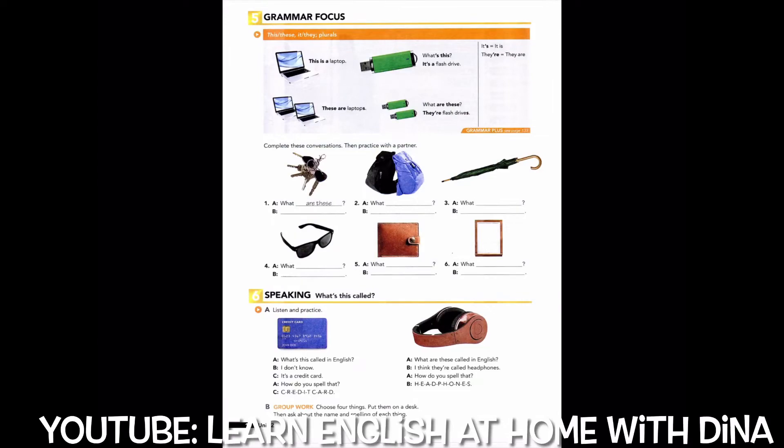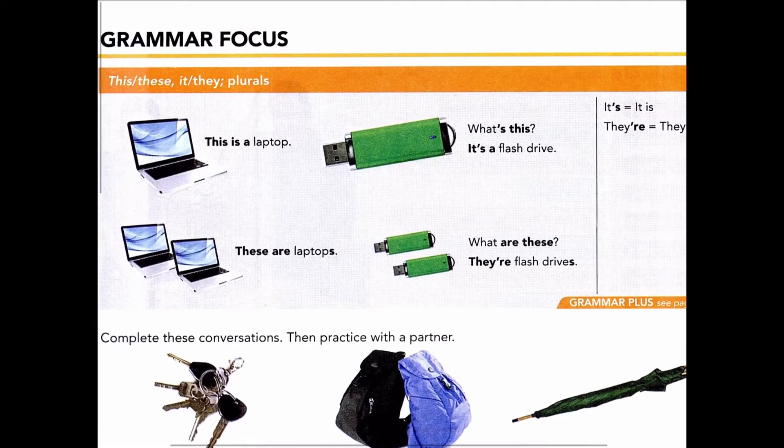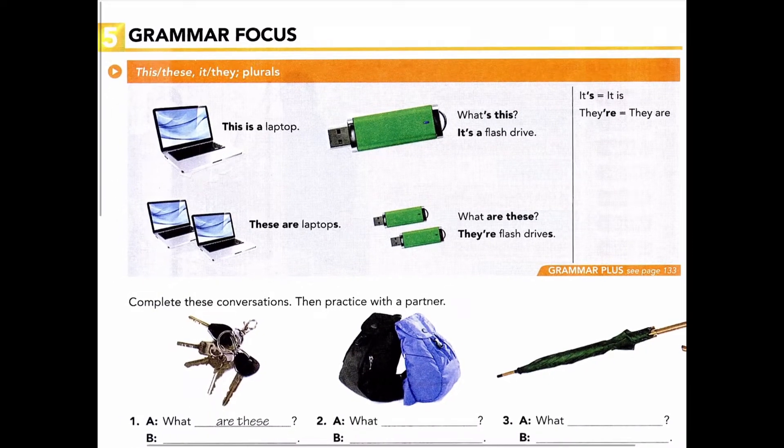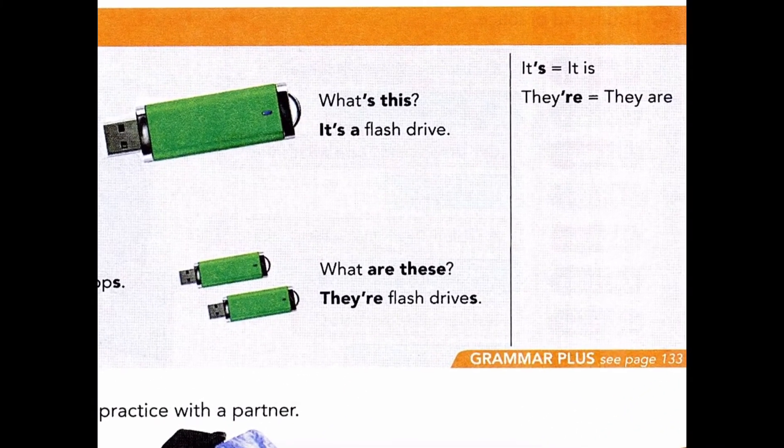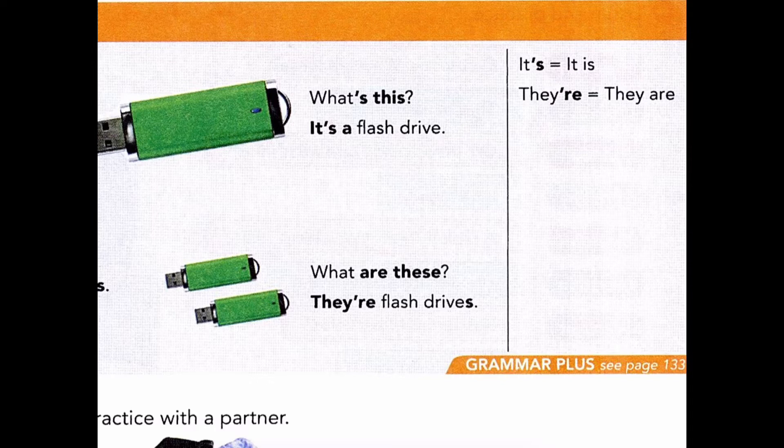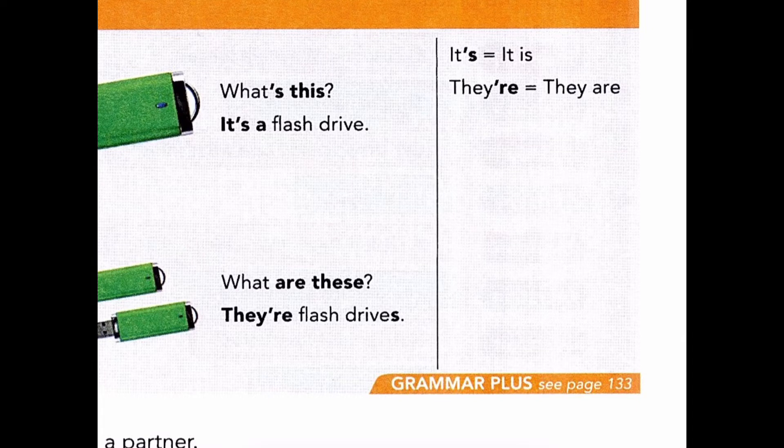Page 10, Exercise 5, Grammar Focus: This, These, It, They, Plurals. This is a laptop. These are laptops. What's this? It's a flash drive. What are these? They're flash drives. It's equals it is. They're equals they are.